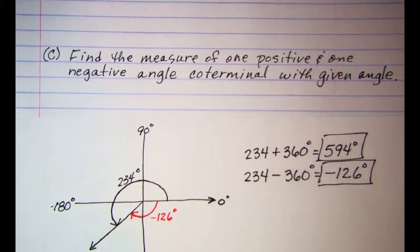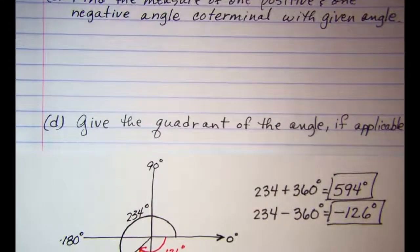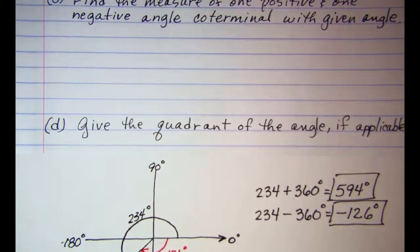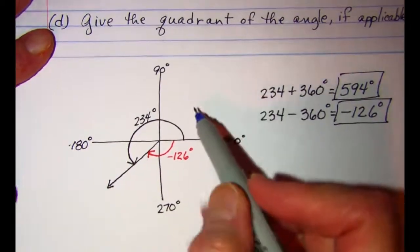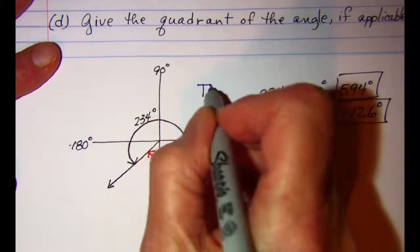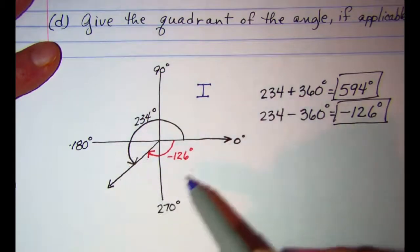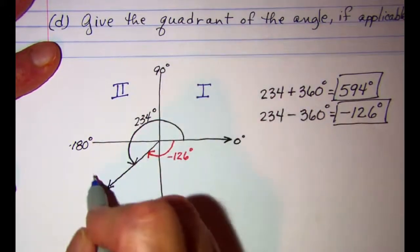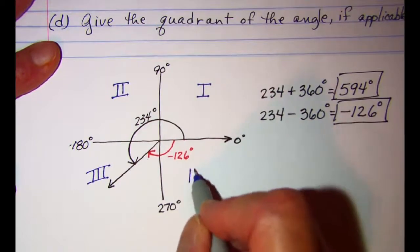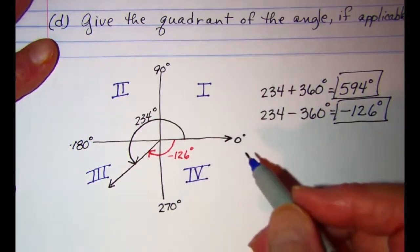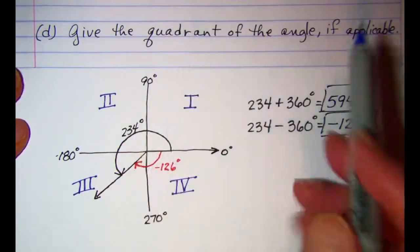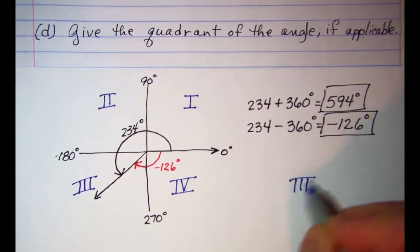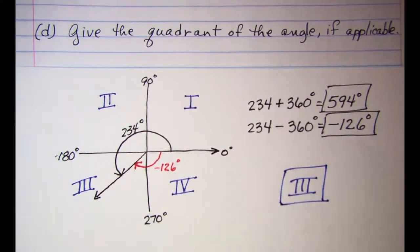The last thing we want to do with this angle is give the quadrant of the angle, if applicable. When x is positive and y is positive, this is quadrant I, and going counterclockwise, quadrant II is here, quadrant III is here, and quadrant IV is here. So our answer is quadrant III. Notice that we use Roman numerals to indicate the quadrant.